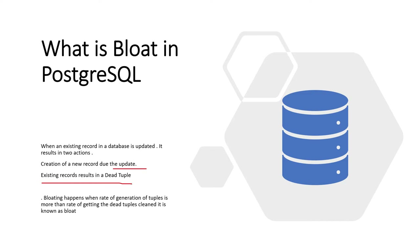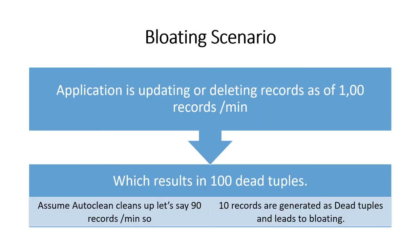In that table, due to the application behavior, the rate of generation of those dead tuples is more than those tuples are getting removed - this is known as bloating. You must have gone through the auto vacuum process wherein dead tuples in the tables are removed. If the rate of accumulation of tuples is more than the rate of removal, it results in those dead tuples keeping on accumulating - that is known as bloat.